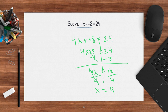Let's check. If I plug 4 in for x, I have 4 times 4 minus negative 8 equals 24. 4 times 4 is 16. We said minus a negative turns to positive, so 16 plus 8. Does 16 plus 8 equal 24? Absolutely. Good job, guys.